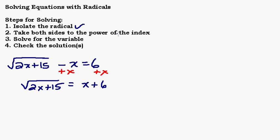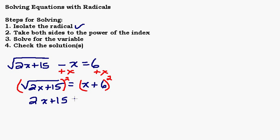Now we can take both sides to the power of the index. The index — remember, this little number here — is not written when it's a square root, and that index is 2. So we need to take both sides to the power of 2, which means square both sides. On the left-hand side, the squared and the square root cancel each other out, so we just end up with 2x plus 15. That's what we wanted — to get rid of that square root. On the right-hand side we're left with a binomial squared.